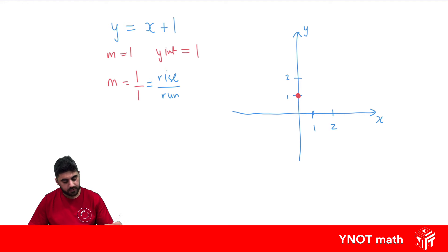So if we remember it moves up 1 for every 1 it runs across. Which means it's going through here and here and so forth. And now we can join those up to form our straight line. So that's another way to do it.